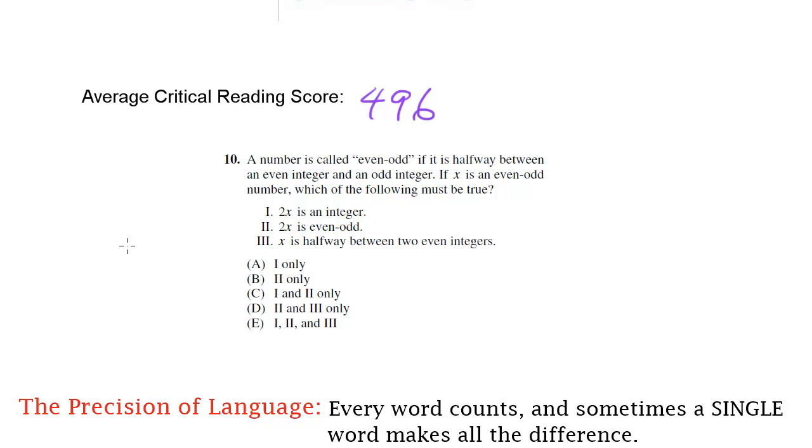So why does this matter? Why is skimming a problem? Well, I'm going to use skimming to illustrate the issue in a math problem. Now you might find it strange that I'm using a math problem here, but I think it'll be clear why in a second. So let's read this question. A number is called even-odd if it is halfway between an even integer and an odd integer. If x is an even-odd number, which of the following must be true?